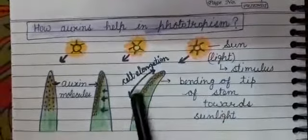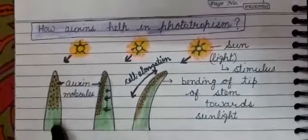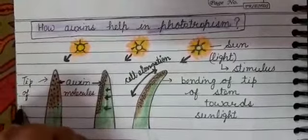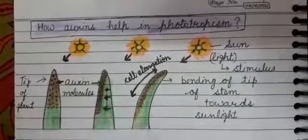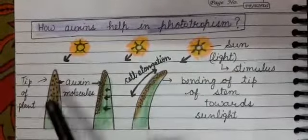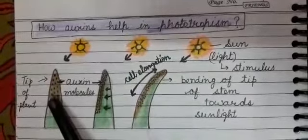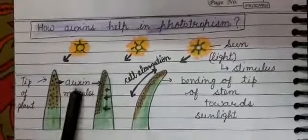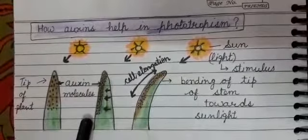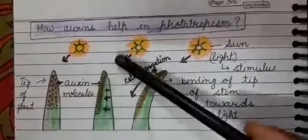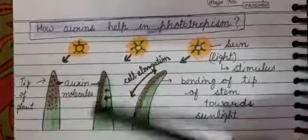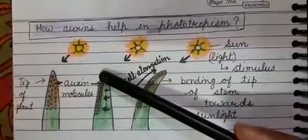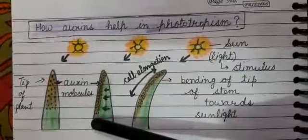How do auxins help in phototropism? Suppose this is the tip of a plant — auxins are synthesized at the tip of the plant. When light falls on the tip from one side, this is the lighted part and this is the shaded part. The auxins move towards the shaded part. In the shaded part, due to the collection of this auxin hormone, cell division increases and the elongation of cells also increases.